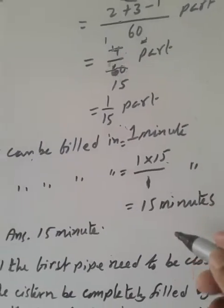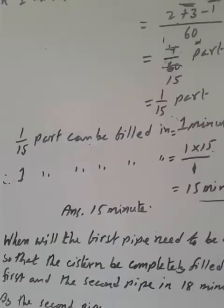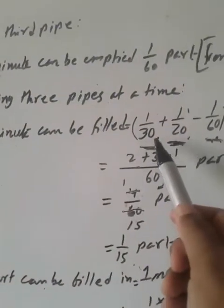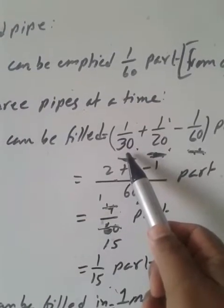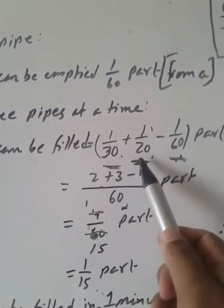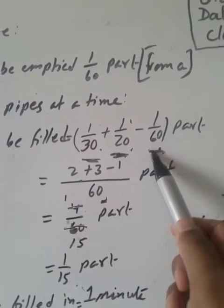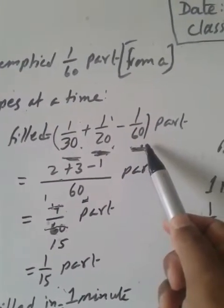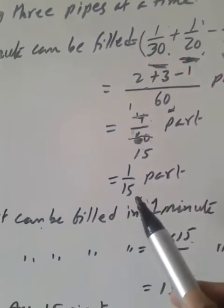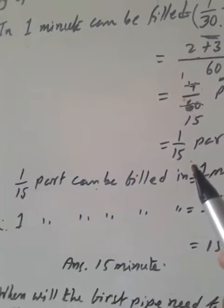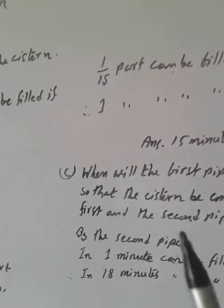So it means when the 3 pipes are open, by the first pipe and second pipe we fill 1/30 part and 1/20 part in one minute, and the third pipe empties 1/60 part. The remaining net fill rate is 1/15 part per minute, so the full cistern fills in 15 minutes.